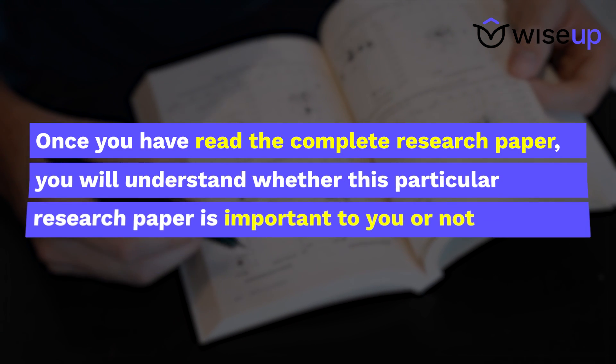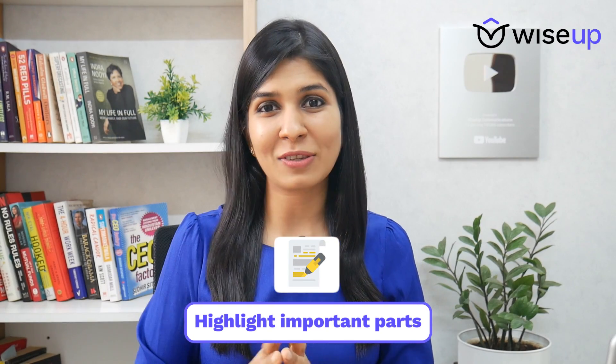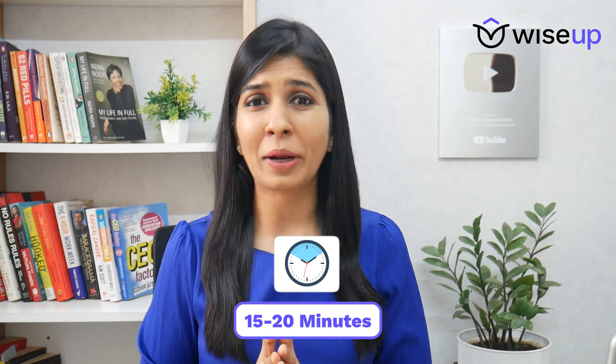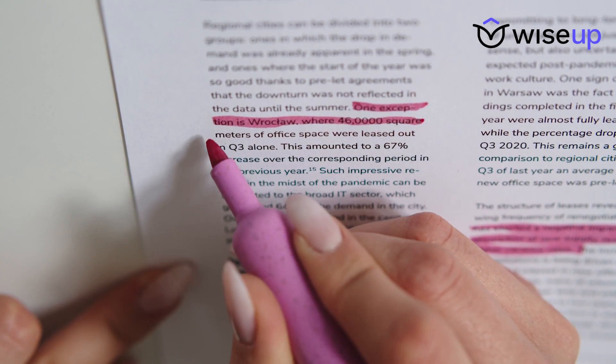In this way you will have completed reading the entire research paper. Once done, you will understand whether this particular paper is important to you or not. If it is important, make sure you highlight the important parts, because reading a research paper roughly takes 15 to 20 minutes, and you don't want to come back and spend those 15 to 20 minutes again. By highlighting the important parts, revisiting the paper later will only require reading the highlighted sections to get the entire summary.